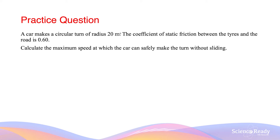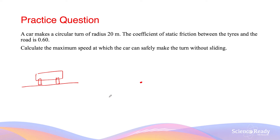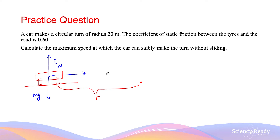A car makes a circular turn over a radius of 20 metres. The coefficient of static friction between the tyres and the road is 0.6. Calculate the maximum speed at which the car can safely make the turn without sliding. We start by drawing a diagram: the car is on a horizontal surface going around the bend, with the radius r pointing to the centre. The weight force acts downwards, the normal force Fn acts upwards, and the static friction fs acts towards the middle of the circle.